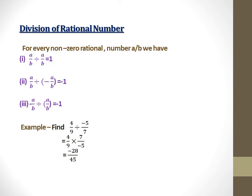Division of rational number: For every non-zero rational number a/b, we have a/b ÷ a/b = 1. It means if the same rational number is divided by itself, the resultant will always be 1.